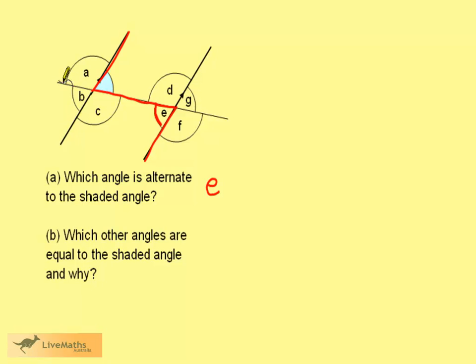Here we can see an X shape. These angles are vertically opposite, so B is equal.